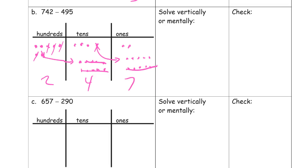Now, looking at this mentally. Oh, I can do this mentally. Because at 495, that's almost 500. Right? So if I add 5 to both, I have 747 minus 500. Which is 247.